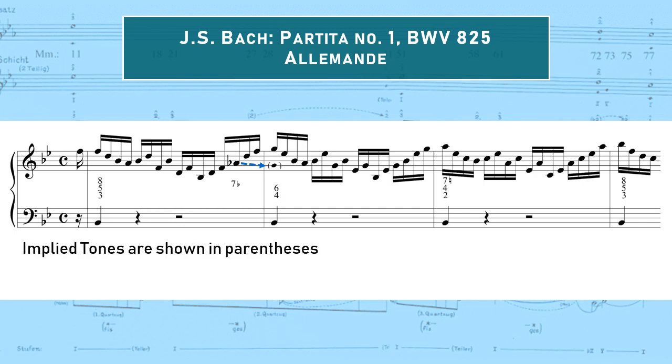Schenker's explanation would be to say that the resolution down by step in the correct register is implied on the downbeat of measure 2. Implied tones, there's that word again, are always shown in parentheses in order to distinguish them from the notes that Bach actually composed. Try thinking of it this way. Of all the possible realizations of this figured bass reduction, Bach happens to have chosen one that doesn't put the dissonance and its realization in the same register. But in the majority of realizations, the A-flat would resolve downward by step. And we want to include that tonal feature in our analytic notation, despite the fact that it isn't realized.